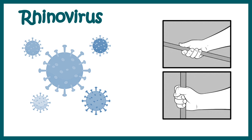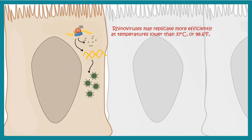Rhinoviruses can spread via surfaces in the form of droplets, so it is a droplet infection as well. Researchers have shown that rhinoviruses may replicate more efficiently when the temperature is lower than 37 degrees centigrade. Remember that 37 degrees centigrade is our normal body temperature.